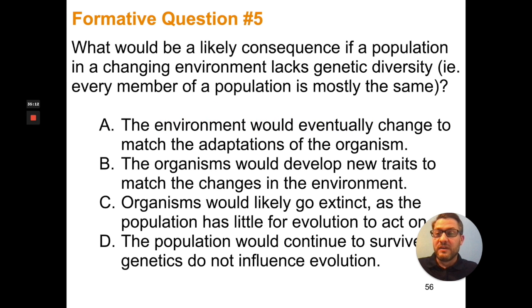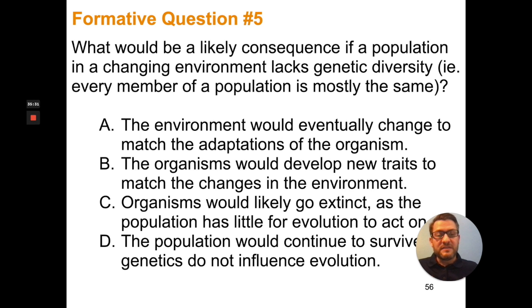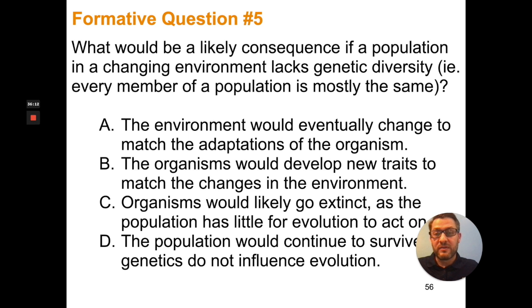The final formative question: what would be a likely consequence if a population in a changing environment lacks genetic diversity — i.e., every member of the population is mostly the same? Think about a population with lots of diversity versus one where everybody is pretty much the same. Imagine the environment is getting much colder. In a population with great diversity, there could be individuals better suited to living in those colder environments. But in a population where everybody is the same, everybody would have about the same tolerance to that cold weather — so what does that ultimately mean for that population? That's the end of the 8.2 notes. Make sure you've completed your notes and answered all the formative questions and submitted those in Canvas.